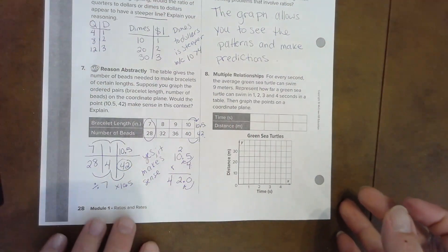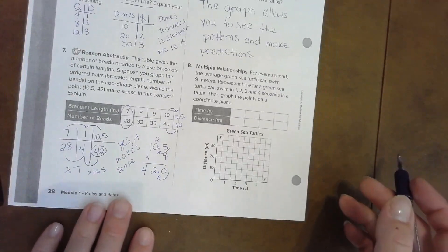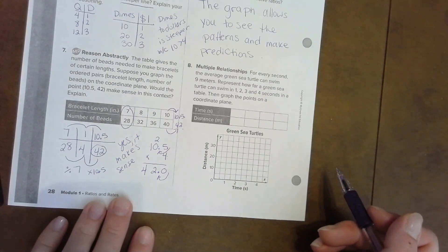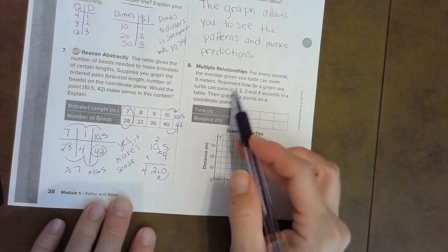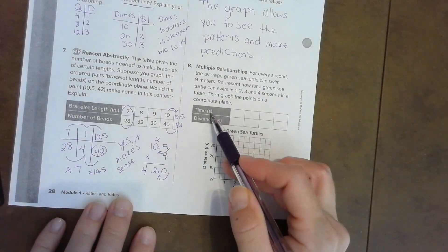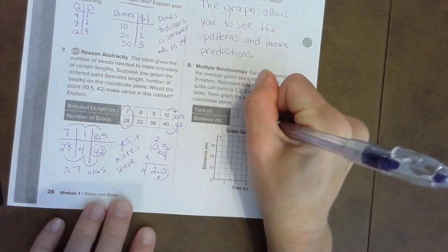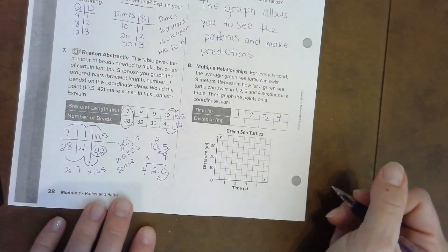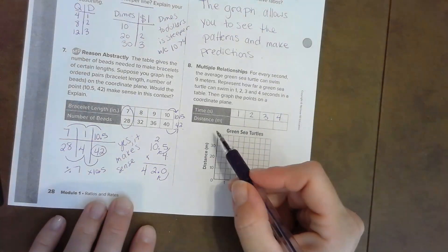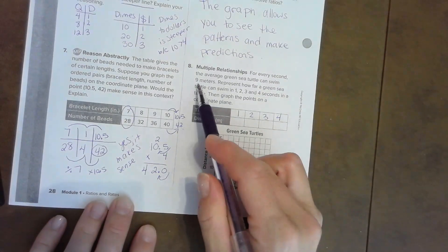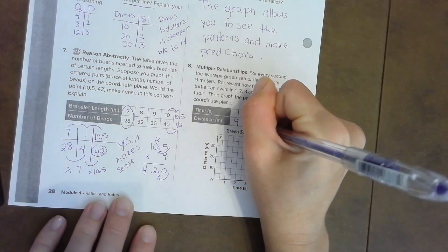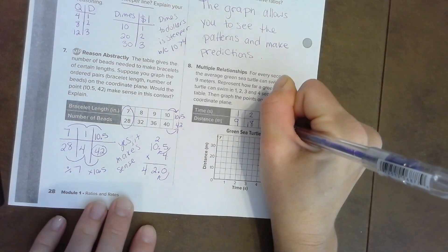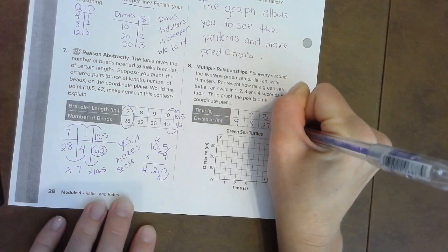Let's do number eight. For every second, the average green sea turtle can swim nine meters. Represent how far a green sea turtle can swim up to four seconds. So here's my time: one, two, three, four. That represents time in seconds. The distance, it says nine meters for every one second. That means eighteen, twenty-seven, thirty-six.